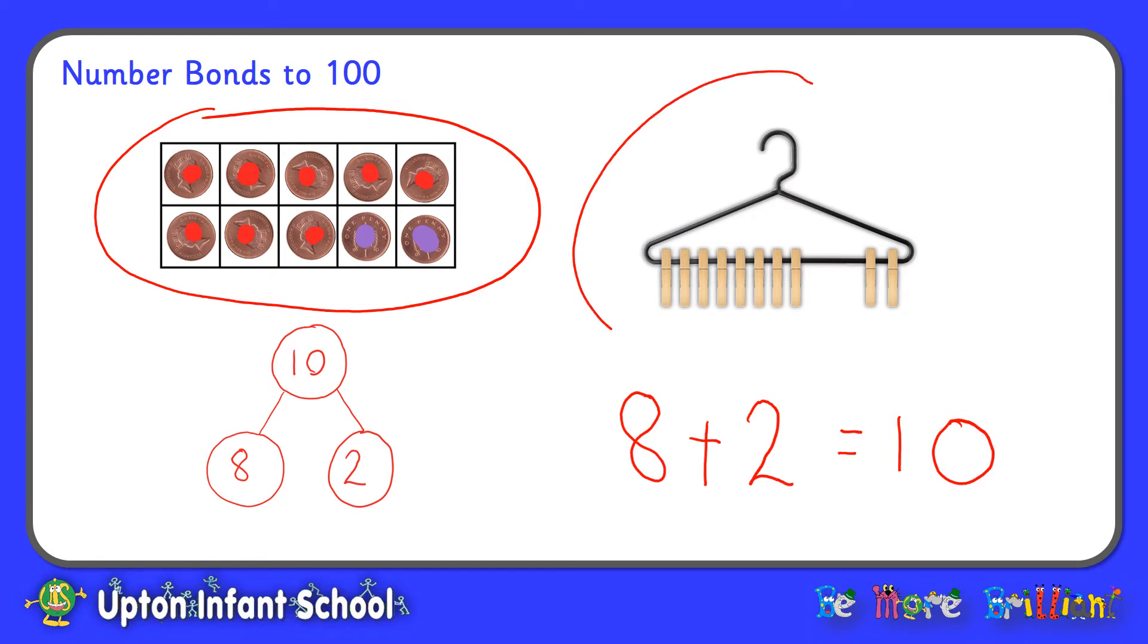We could also represent number bonds to 10 using 10 pegs on a coat hanger, and by sliding the pegs along you can make different groups, different number bonds. So in the picture here we've got 8 pegs on the left and 2 on the right. 8 and 2 all together makes 10.